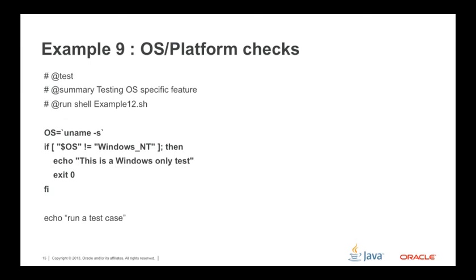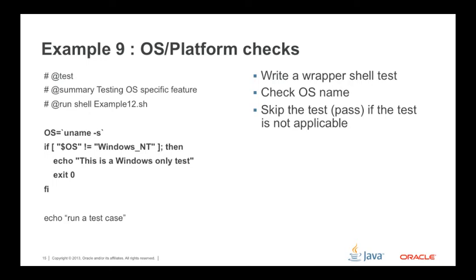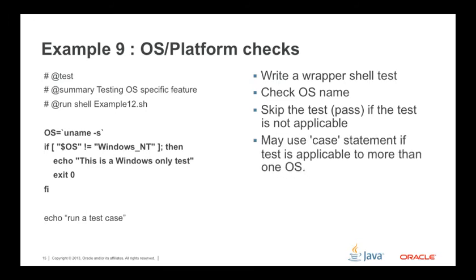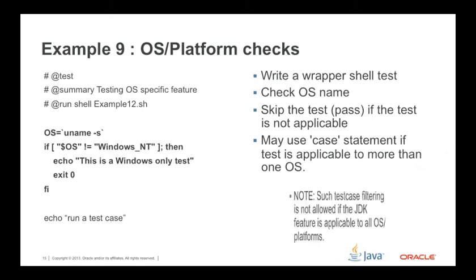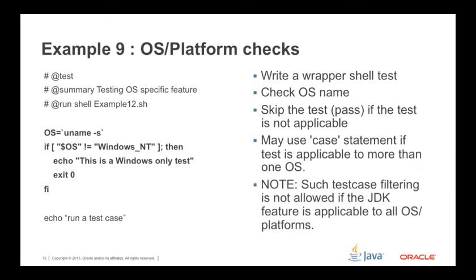OS Platform Checks: This is more of a utility rather than a test case. There are numerous situations where a feature and thus the test case is applicable to a particular platform. In such a situation, write a wrapper shell test, check the OS name, and if the test is not applicable to that platform, simply make the test case pass. Instead of an if statement, a case statement can be used as well. However, such test case filtering is not allowed if the JDK feature is applicable to all OS platforms.